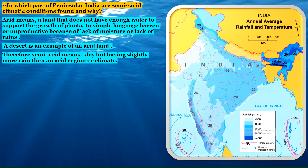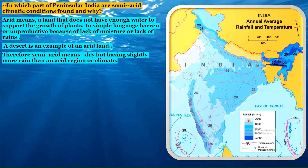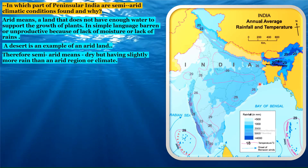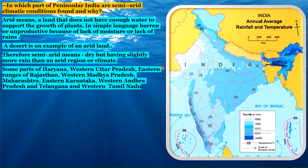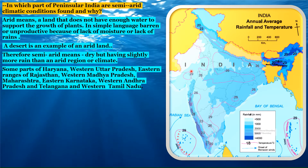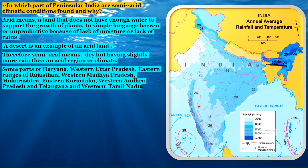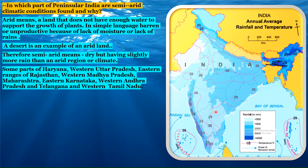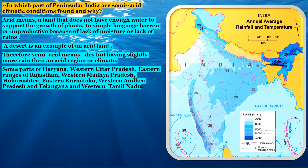The semi-arid regions in peninsular India are: some parts of Haryana, western Uttar Pradesh, eastern ranges of Rajasthan, western Madhya Pradesh, Maharashtra — that is the Marathwada region — eastern Karnataka, western Andhra Pradesh and Telangana, and western Tamil Nadu. These are the semi-arid regions of peninsular India.